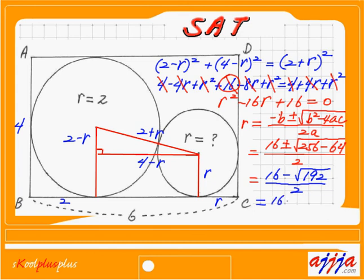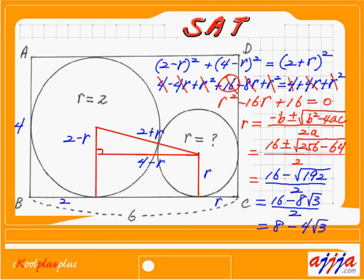So R equals (16 minus 8 square root of 3) over 2, which simplifies to 8 minus 4 square root of 3. Factoring out 4 gives 4 times (2 minus square root of 3). Using square root of 3 approximately equal to 1.7321, we get the final answer: R is approximately 1.0716 units. This makes sense — R is just a little more than 1, which is smaller than the big circle's radius of 2.